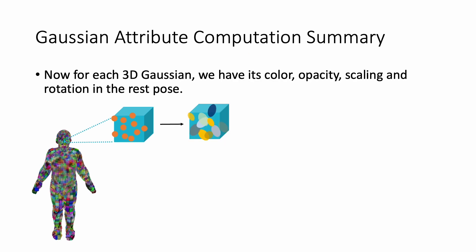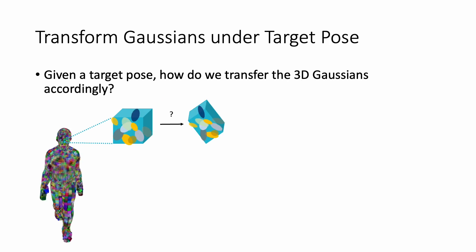Now for each 3D Gaussian, we have its color, opacity, scaling and rotation defined in the rest pose. How do we transform them given a target pose?